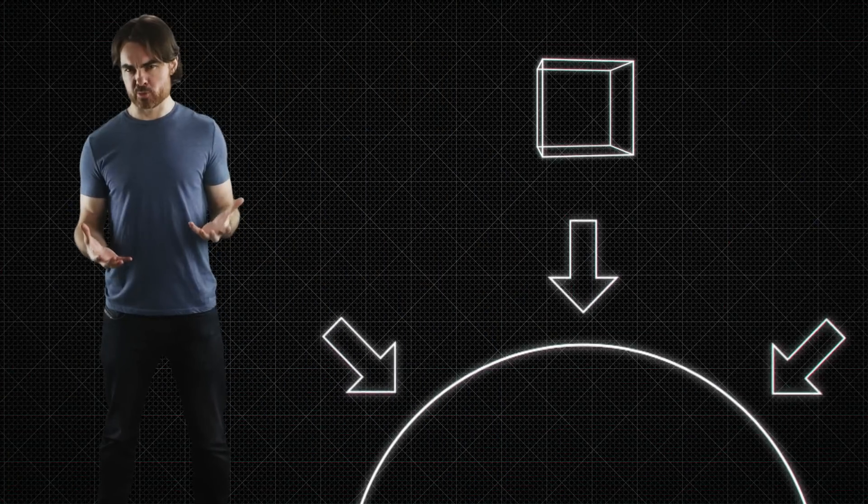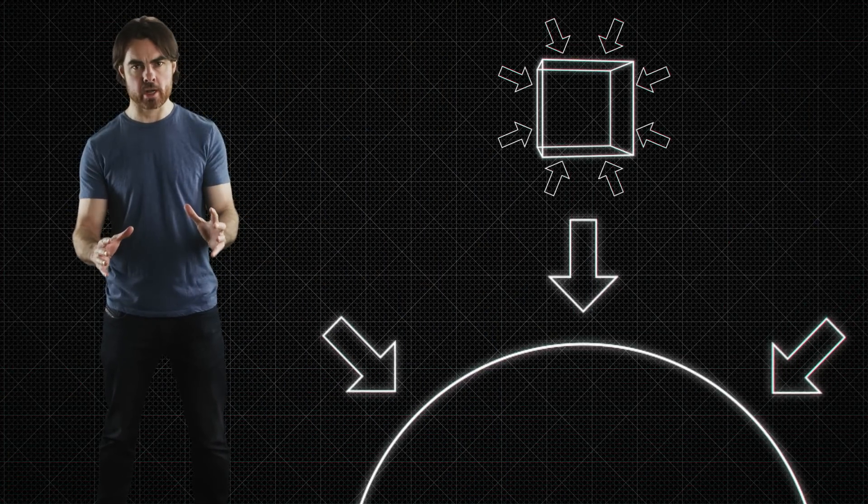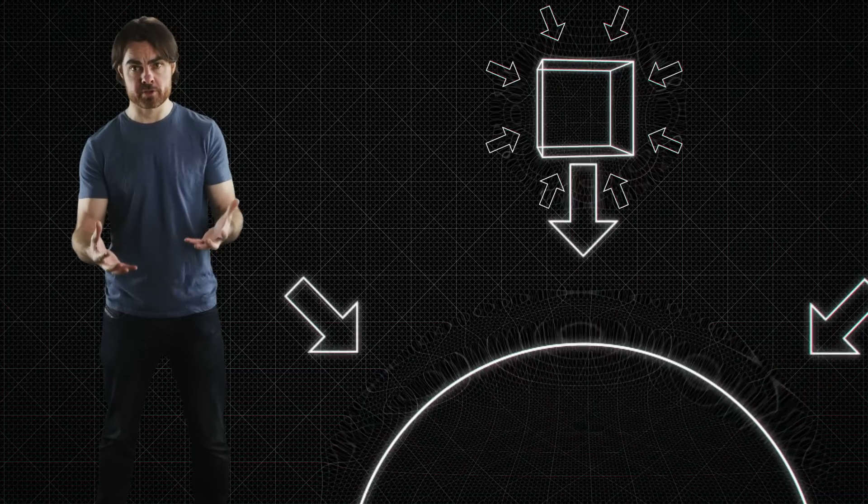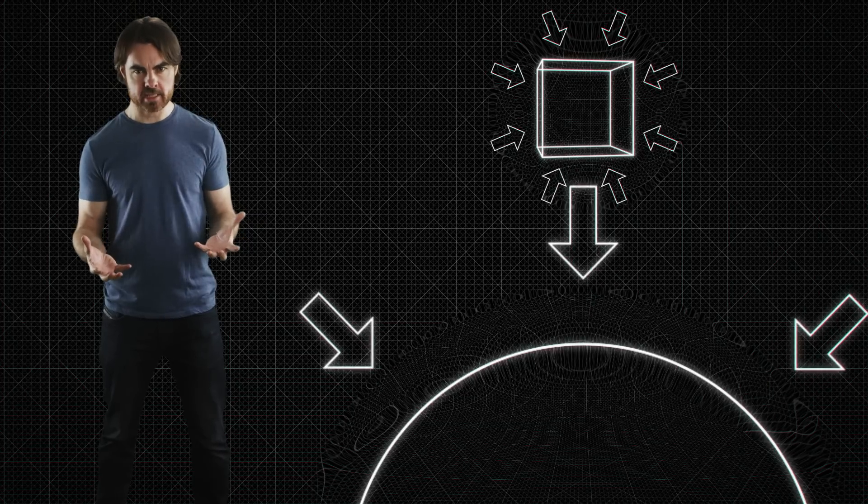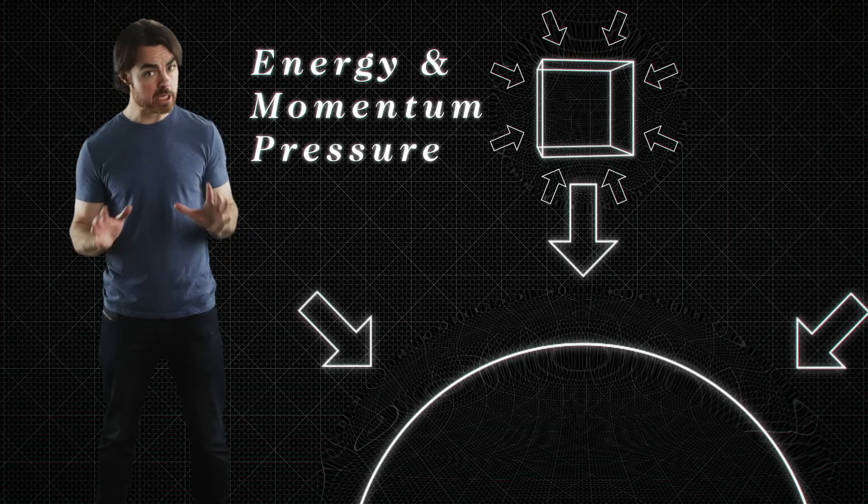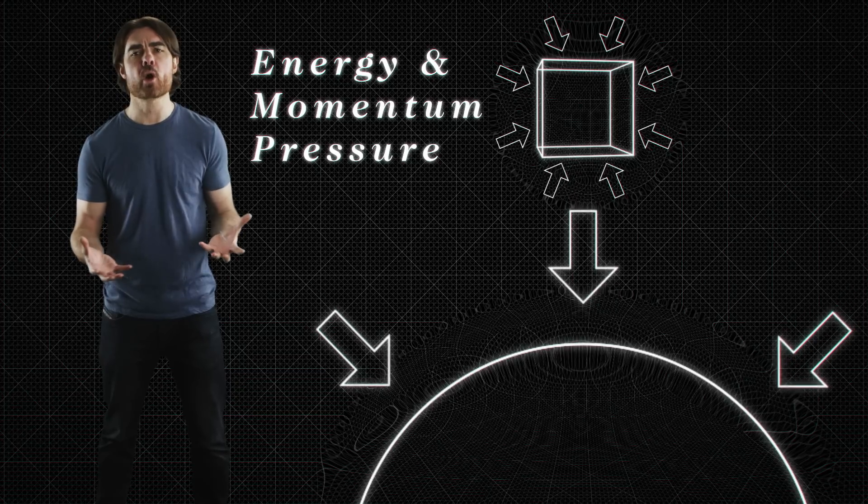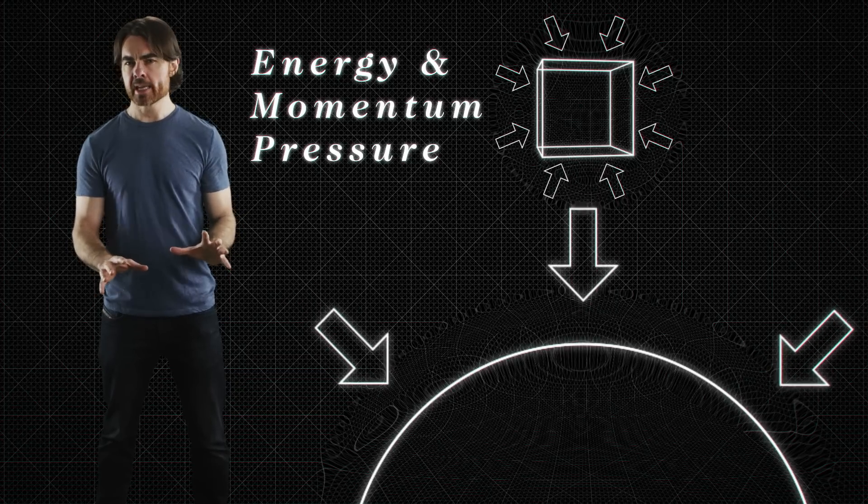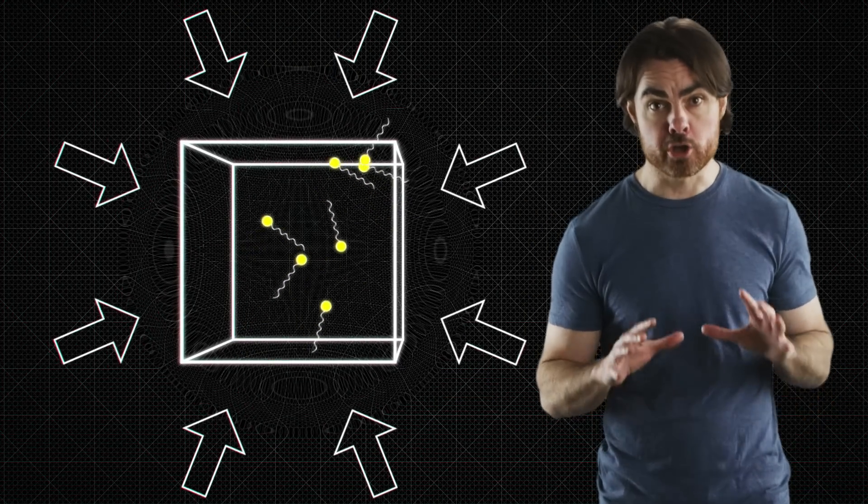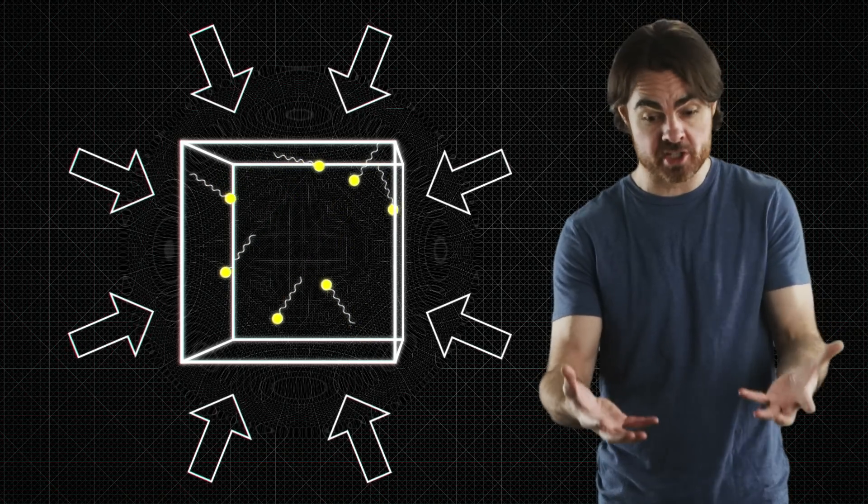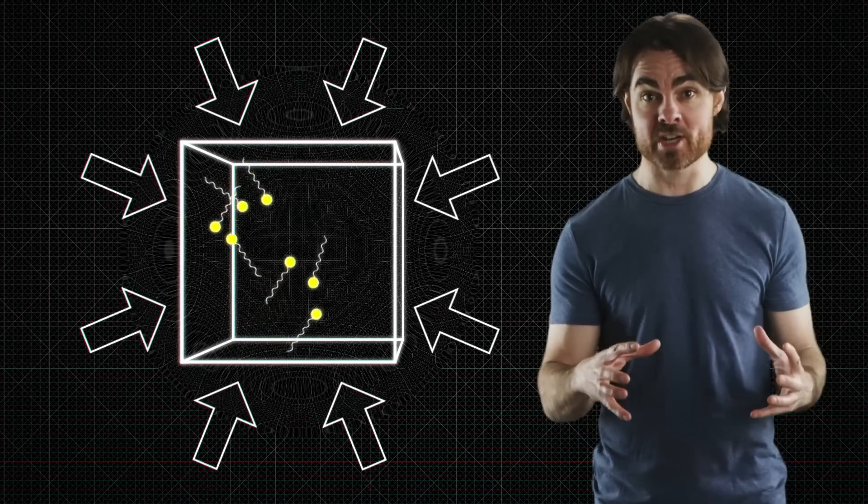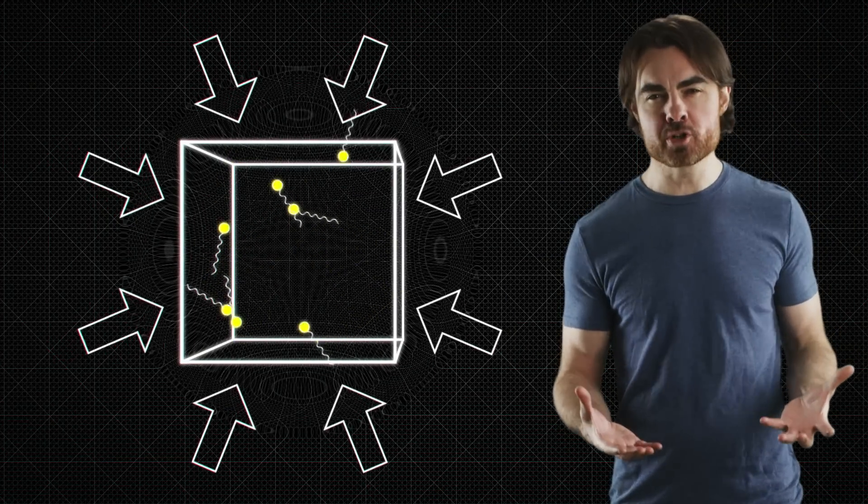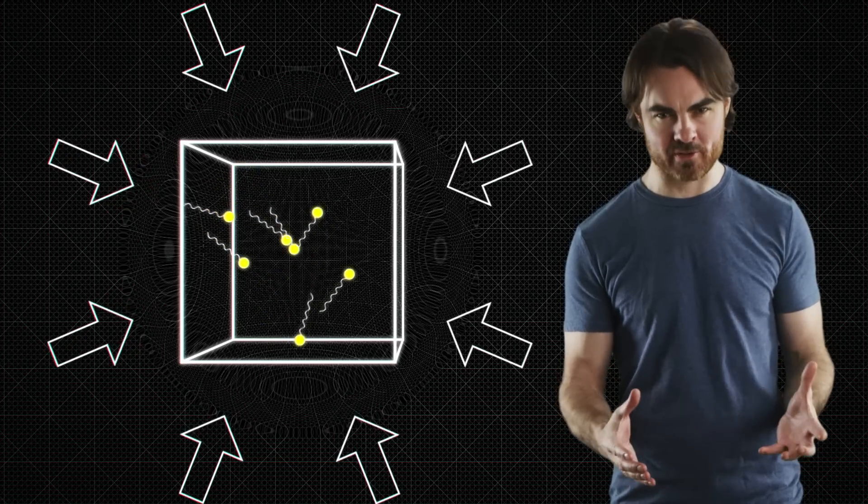But mass doesn't just respond to a gravitational field. It generates one. Mass curves the fabric of space. Actually, it turns out that it's not just mass that bends space. The presence in the flow of energy and momentum, as well as pressure, all have their quite different effects on the curvature of space-time. Individual photons affect space-time. And when you trap them in a box, the curvature that they produce looks just like gravity. So confined massless particles generate a very real gravitational field. OK, so mass is an emergent property of the interactions of massless particles.